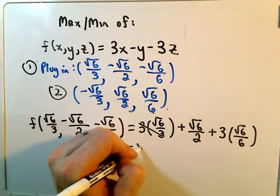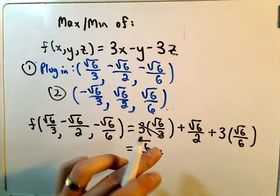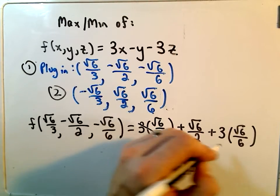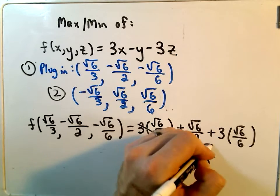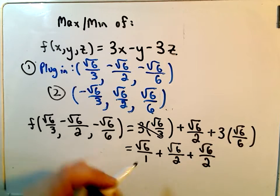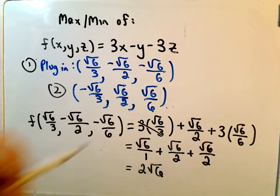We could cancel out the denominator of 3, but I'm going to keep it square root of 6 over 1 plus square root of 6 over 2. Again, we could make the denominator here into a 2 as well. I'm going to have square root of 6. Well, you've got a half root 6, a half root 6, and a whole root 6. That's going to give you 2 root 6 as one value.